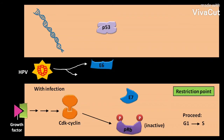In the absence of PRB, the cell cannot progress from G1 to S phase of the cell cycle is disrupted. As a result, cell proliferation occurs uncontrolled and it leads to tumor formation.